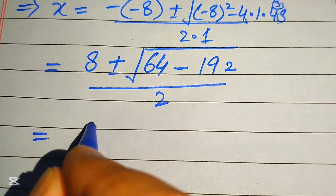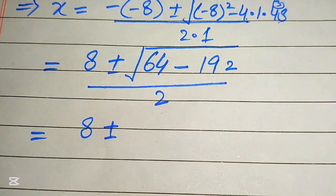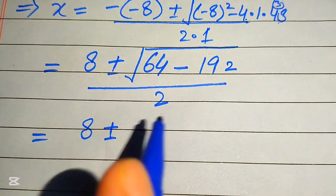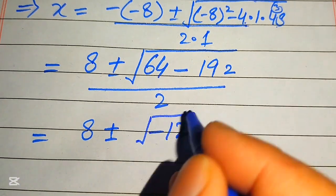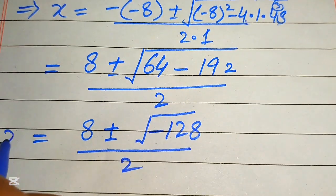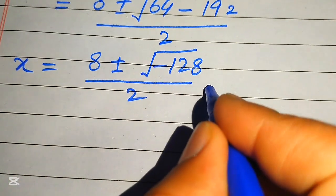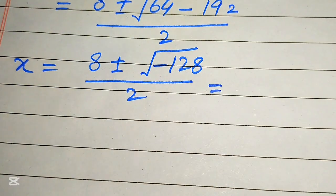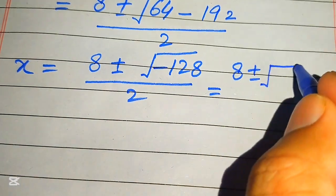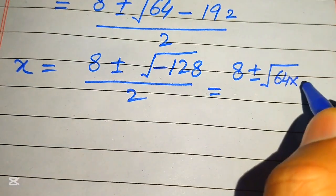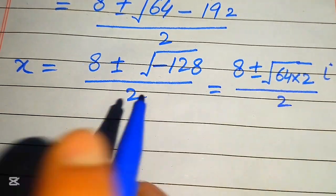Here we need to subtract these two values: 64 minus 192 equals minus 128. So we have 8 plus or minus the square root of minus 128, divided by 2. We need more simplifications, so we rewrite 128 as 64 times 2, and we know that the square root of minus 1 equals iota, divided by 2.